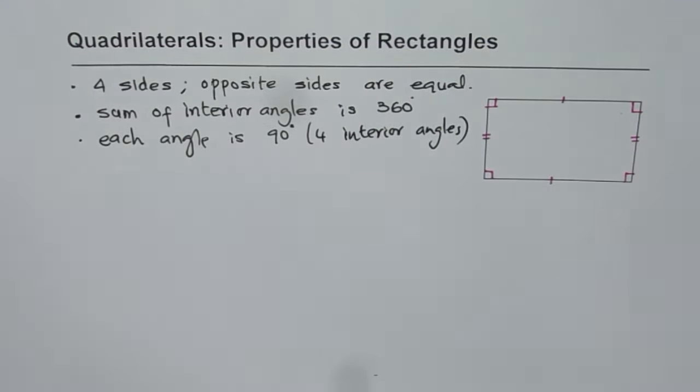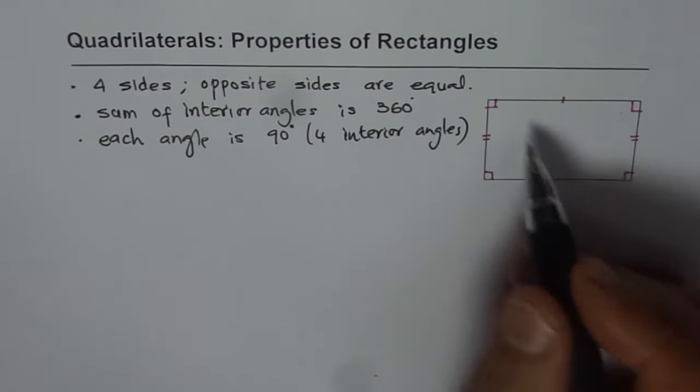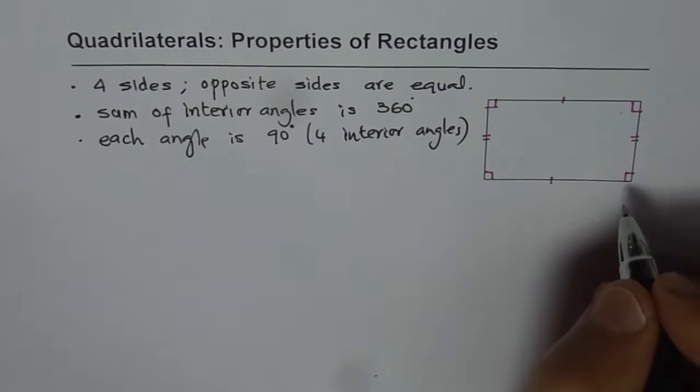I would like you to understand these interior angles. Each one of them is 90 degrees. So when we draw like this, it means 90 degrees.